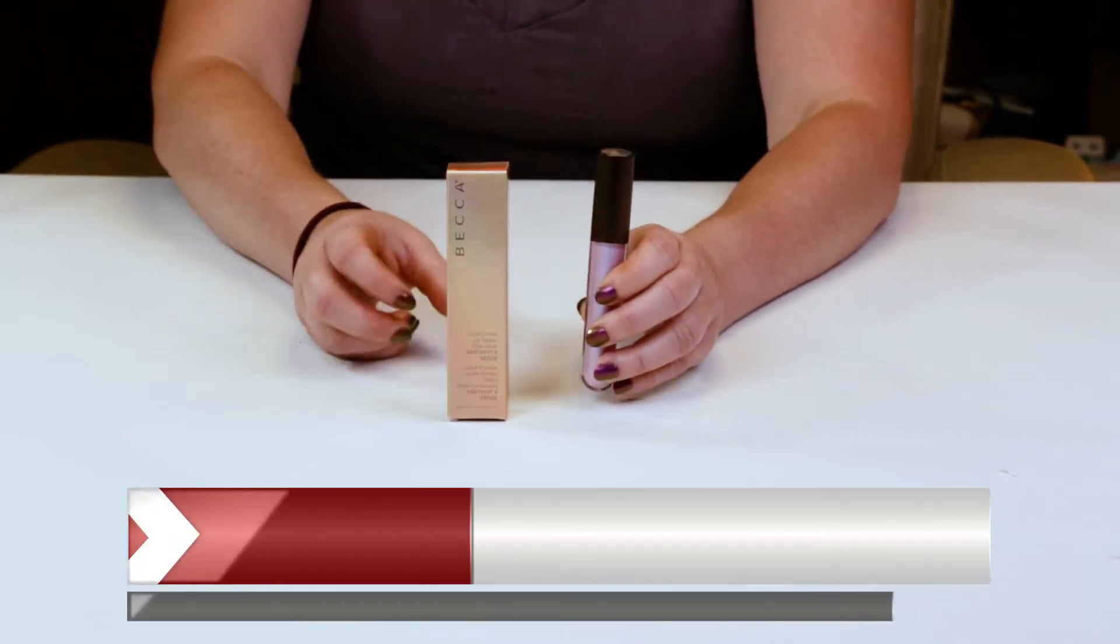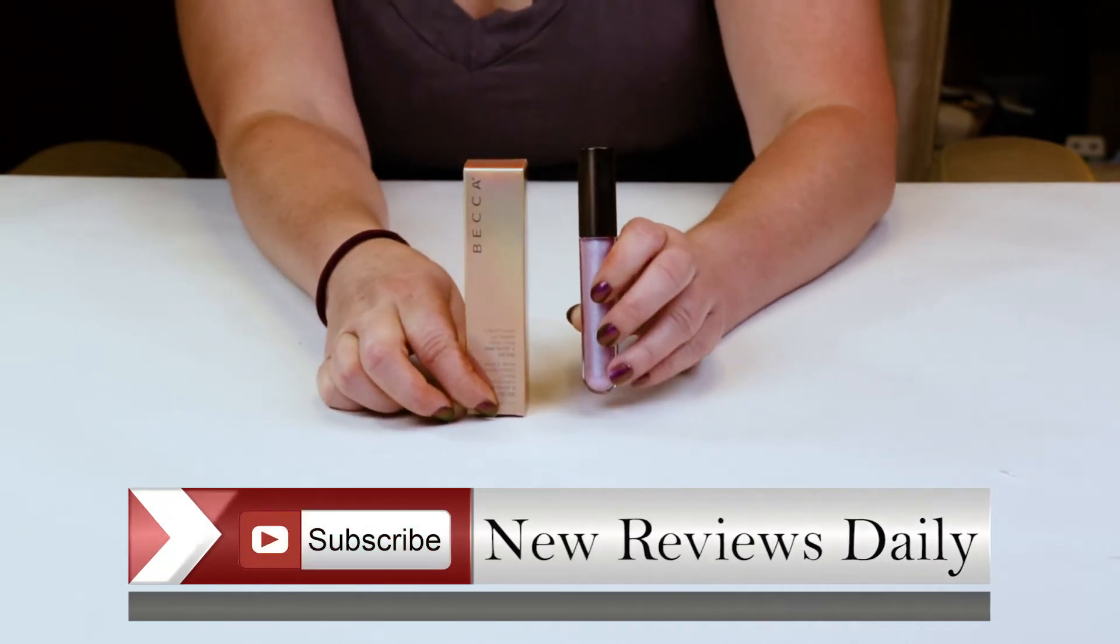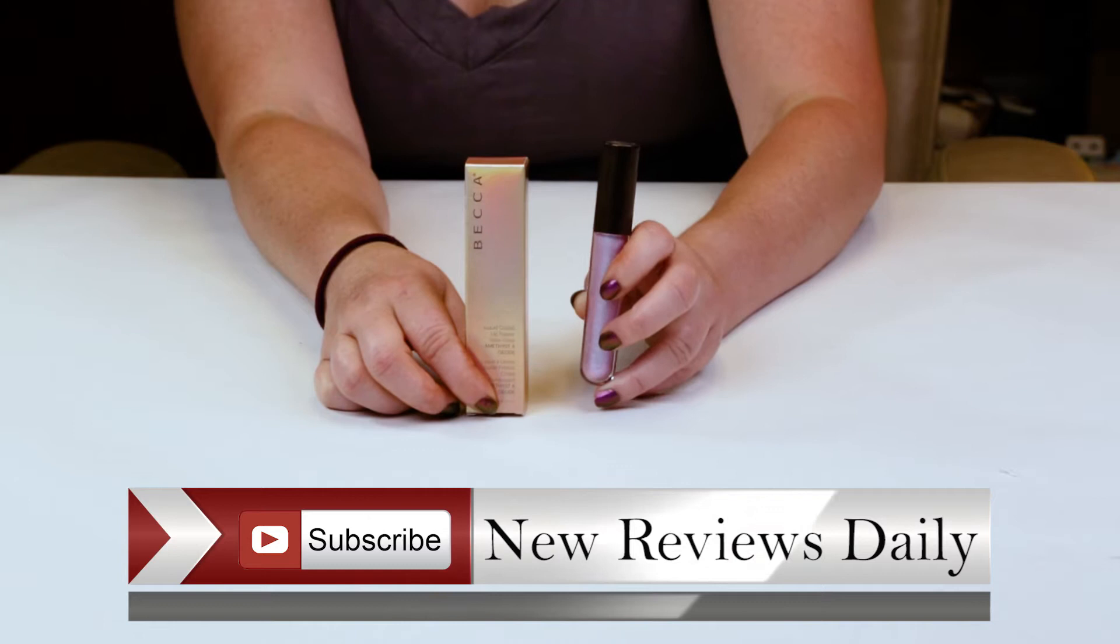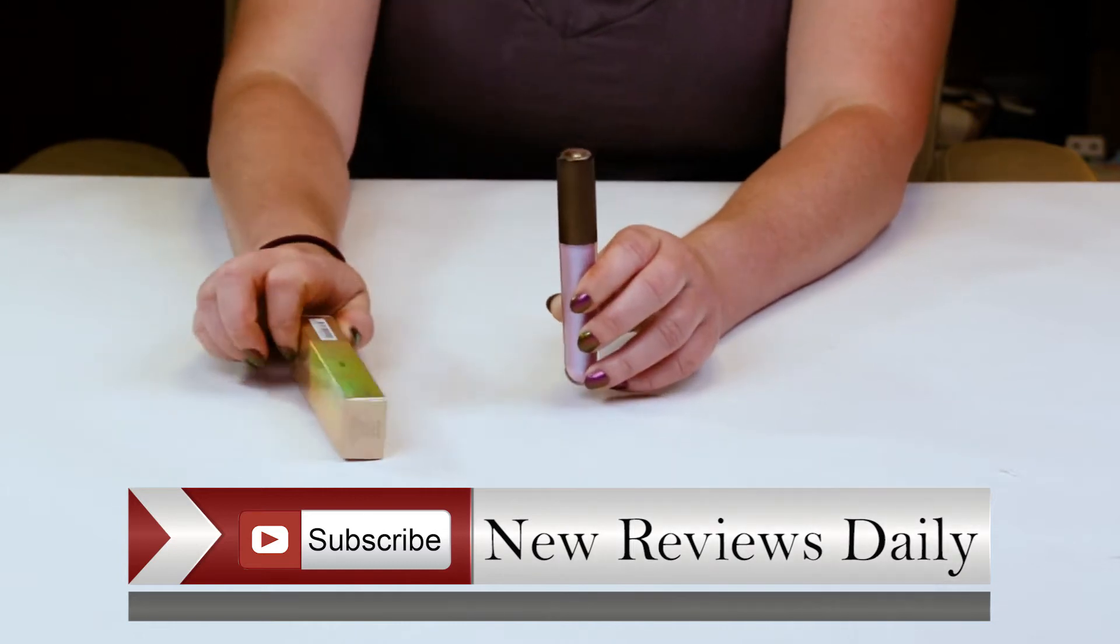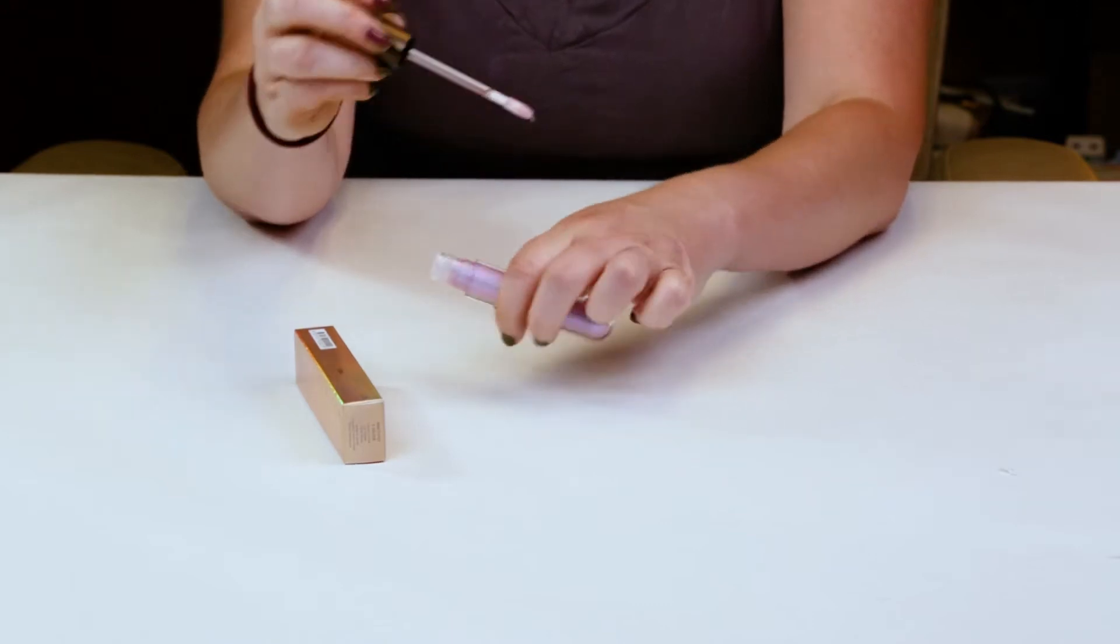There are six shades and the shade I purchased was Amethyst and Geode, which is a lavender duochrome with aquamarine shift. And I'll give you a swatch here so you can see.